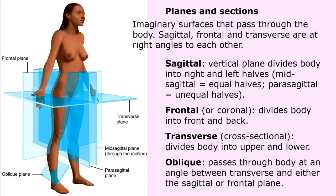We also have planes and sections. We do this so that when examining a patient — maybe with images from X-rays or PET scans — we know exactly what part of the body we're looking at. These planes are imaginary surfaces passed through the body. We have the sagittal, which is a vertical plane, and specifically the mid-sagittal.